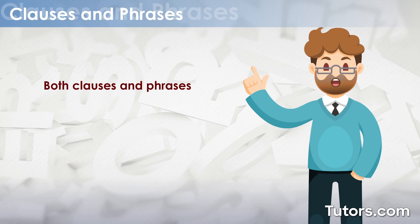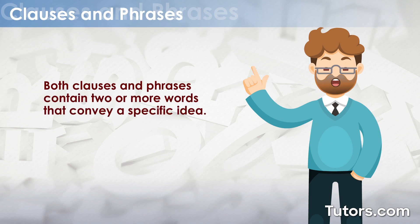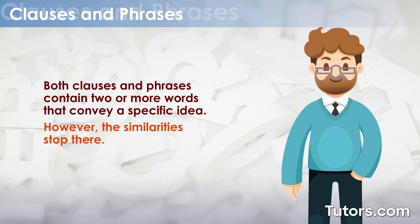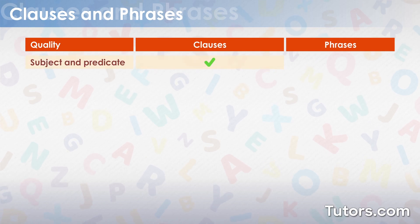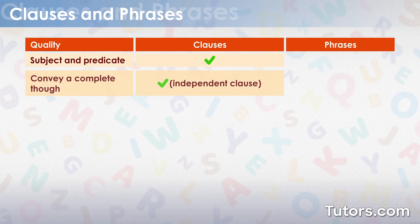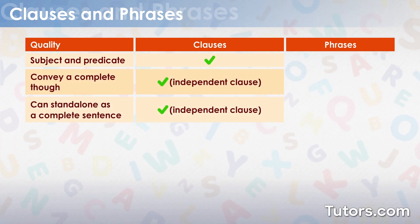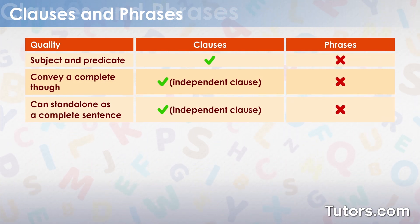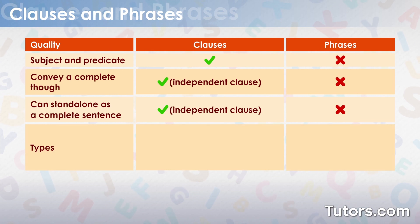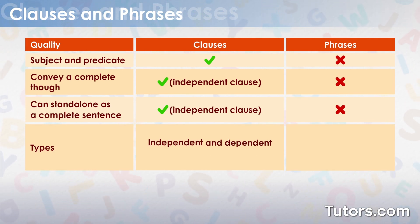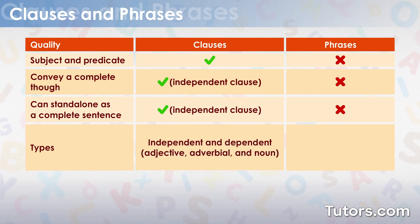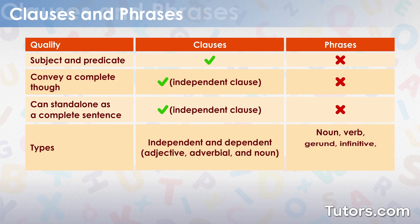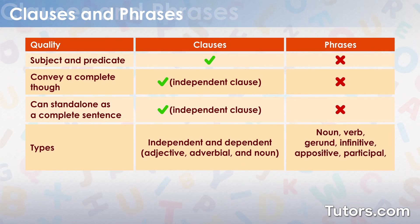Both clauses and phrases contain two or more words that convey a specific idea. However, the similarities stop there. Clauses have a subject and predicate, can convey a complete thought, and can stand alone as a complete sentence. Phrases do not. There are only two main types of clauses, independent and dependent. There are many types of phrases including noun, gerund, appositive, and absolute.